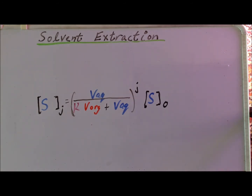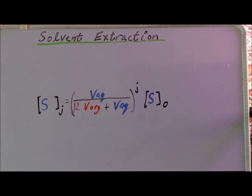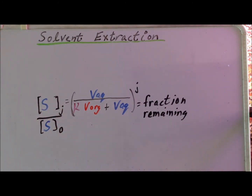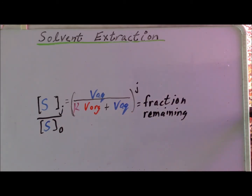Because the claim involves percentages, we need to make a small modification to our solvent extraction equation. Simply, we are going to divide by the concentration of S₀ from both sides. Once we have divided by the concentration of S₀ on each side, we can cancel this expression on the right-hand side, and then this expression on the left-hand side. Since S_J is the amount remaining after J extractions divided by the original concentration, this gives us the fraction of the solute remaining after J extractions.